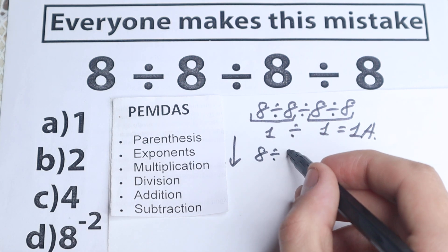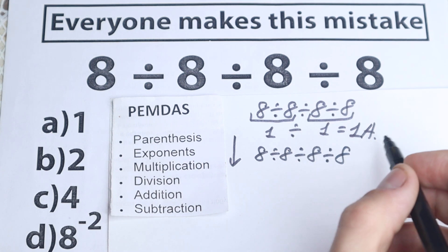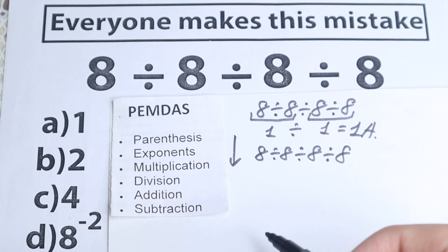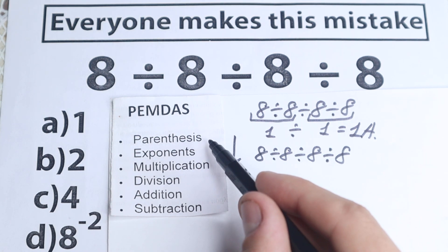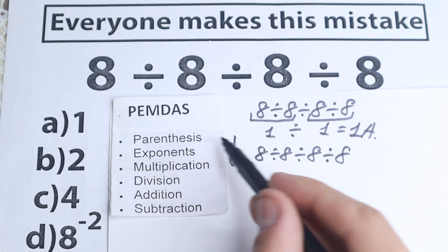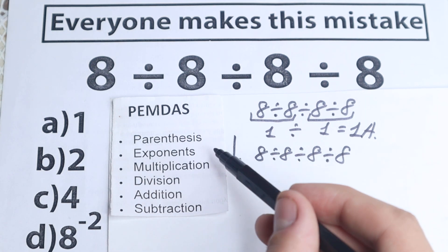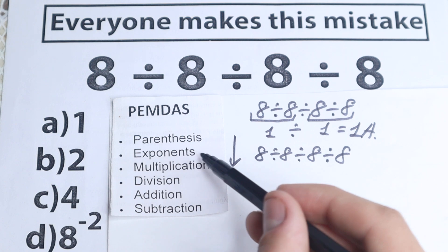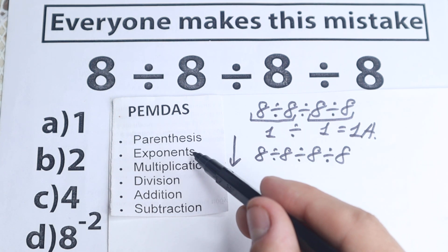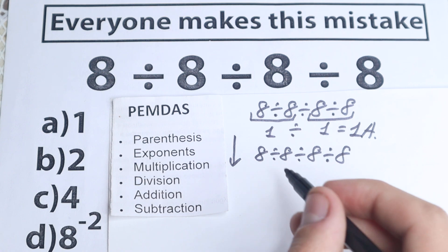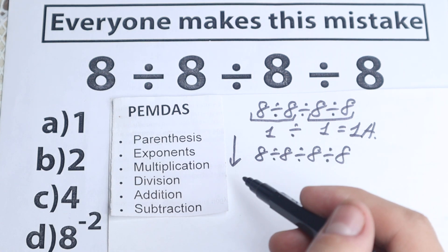So let me rewrite this problem: A divided by 8. According to PEMDAS, the first step is parentheses — are there any parentheses here? No, so we skip that part. What about the next step? Exponents — are there any exponents? No, we don't have any squares or cubes, which is great, so we skip that as well.